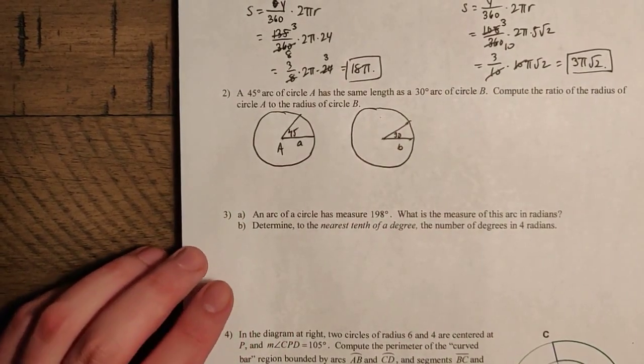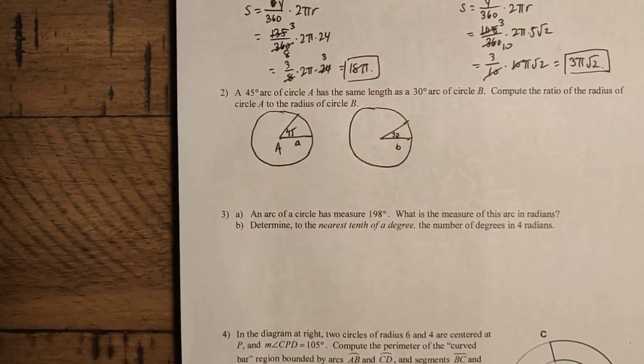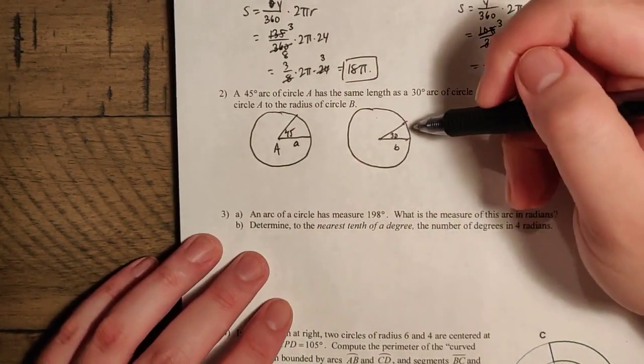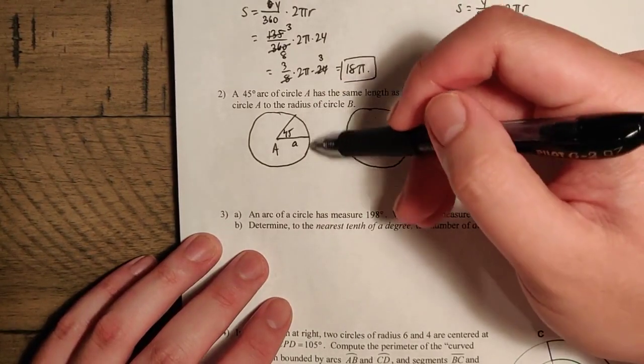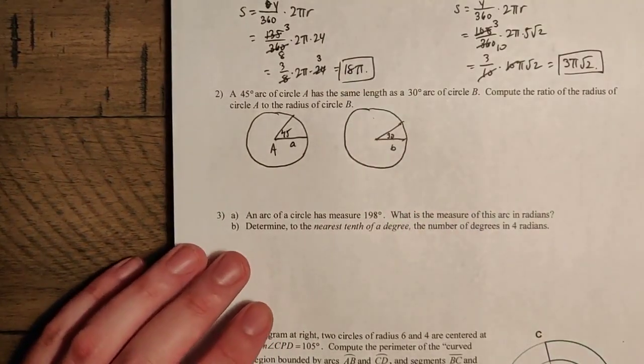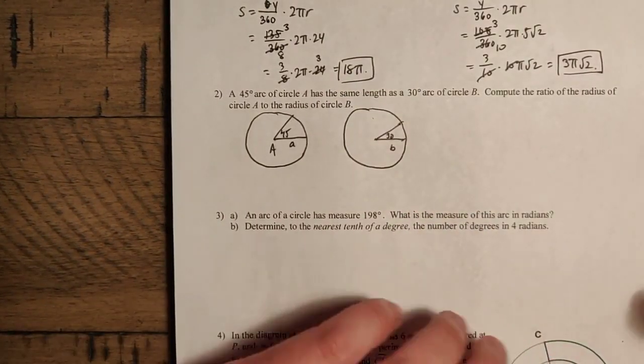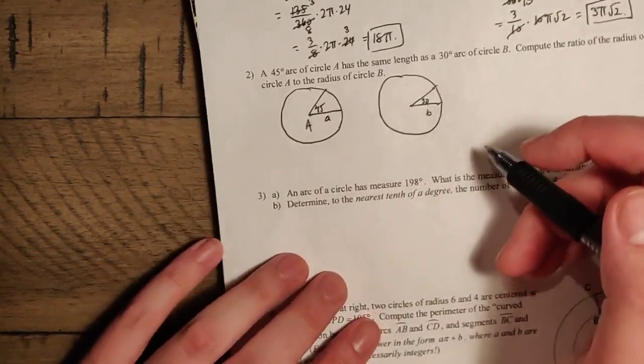So considering what's going on here, it should make sense that B should be bigger, because we have a smaller portion of the circle being equal in length to a larger portion of circle A. So now we can try to put this together. Let's take a look at each of the arc lengths.